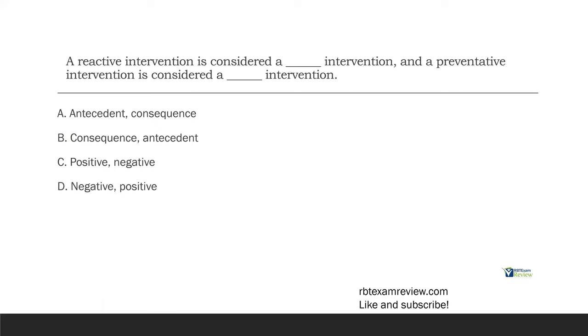More specifically, an antecedent intervention is usually meant to prevent a behavior from occurring. A consequence intervention is more reactive. Now, the behavior has already occurred. We have to decide what we're going to do.